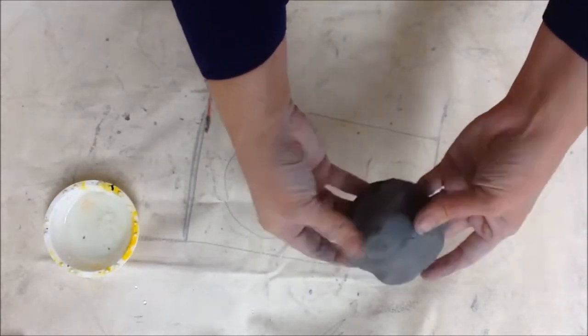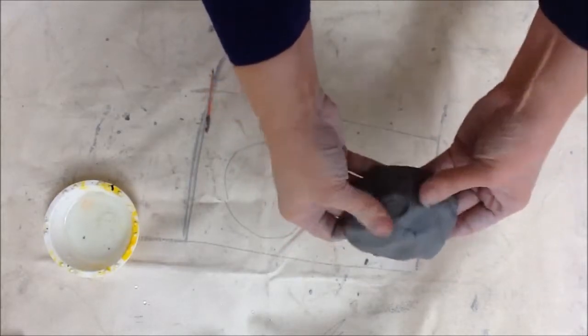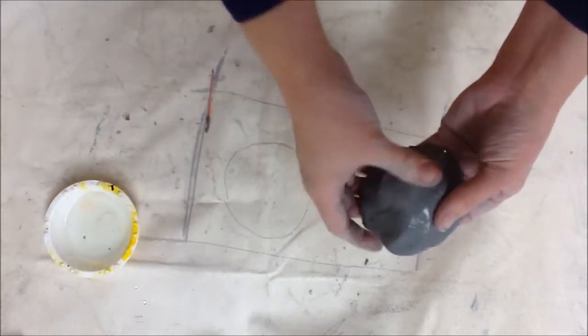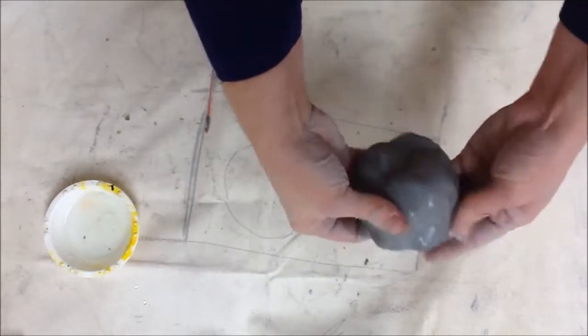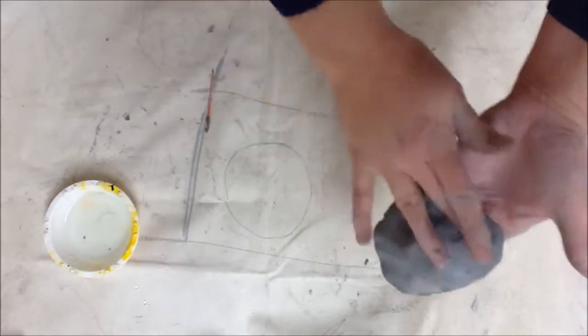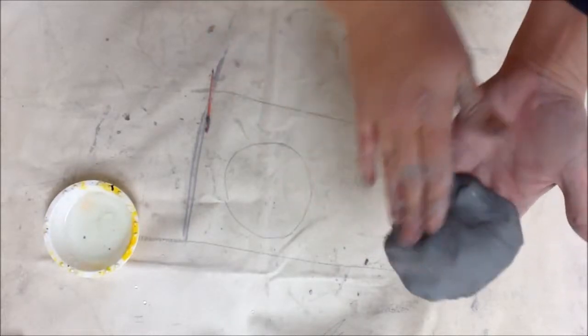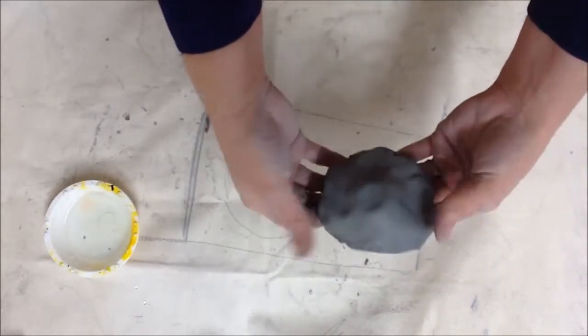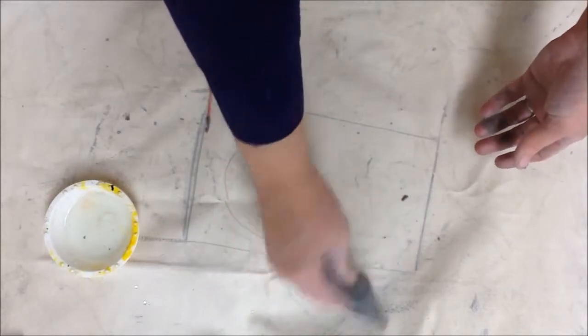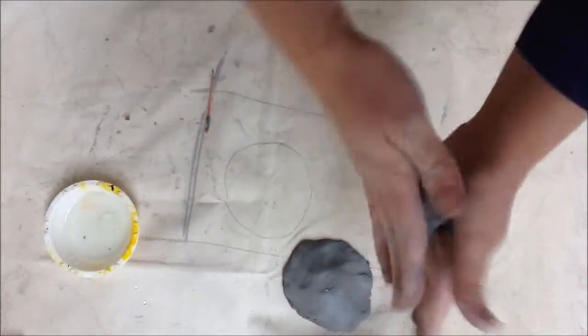Now you can leave it lumpy and bumpy if you want for your turtle shell, or again get a little bit of water, not a lot, just a little bit to make it a little slippery, and you can smooth out that side of the shell. I don't mind leaving some of the natural bumps and cracks in there. It makes it look more natural. So that's one side of my turtle shell that I've done.